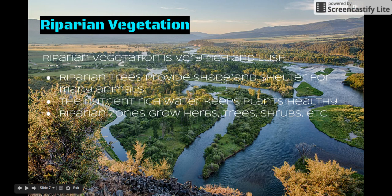Riparian Vegetation is very lush. It provides shade for many animals, and the nutrient-rich water keeps plants healthy, such as trees, herbs, and shrubs. The plants are very lush, special, and green.